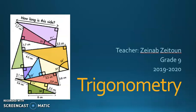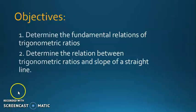Hi everybody, this is Zeynep Zeytun. In this video, I'm going to explain the second part of trigonometry for grade 9. The objectives of this part are to determine the fundamental relations of trigonometric ratios and determine the relation between trigonometric ratios and the slope of a straight line.